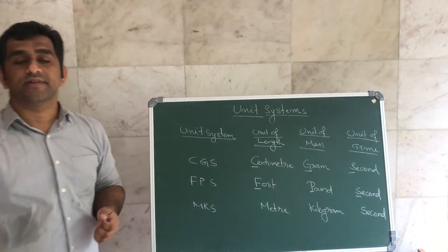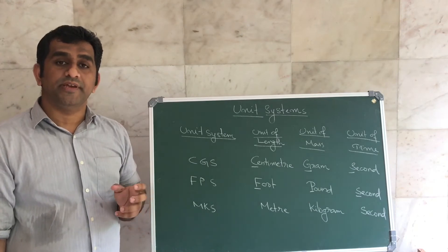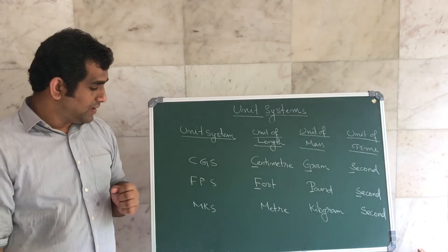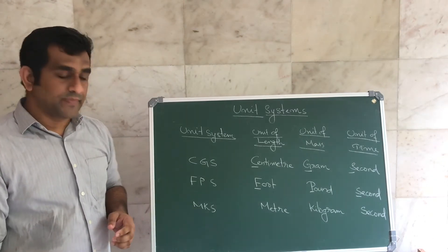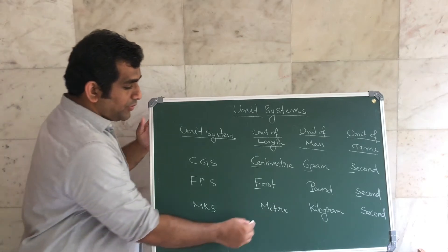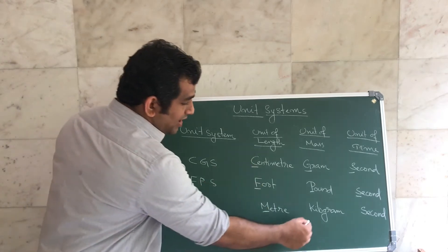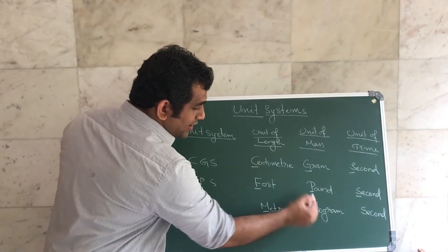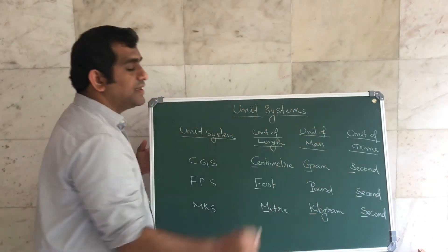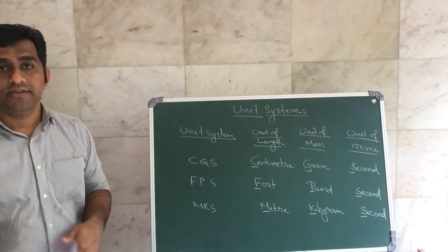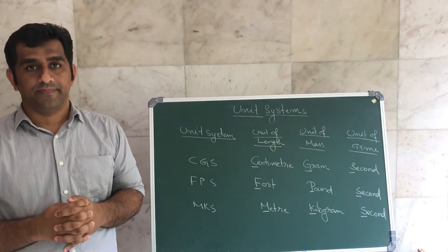What is the name of this system — foot, pound, second? That is the FPS system. In the MKS system, the unit of length is meter, the unit of mass is kilogram, and the unit of time is second. That is the MKS unit system.